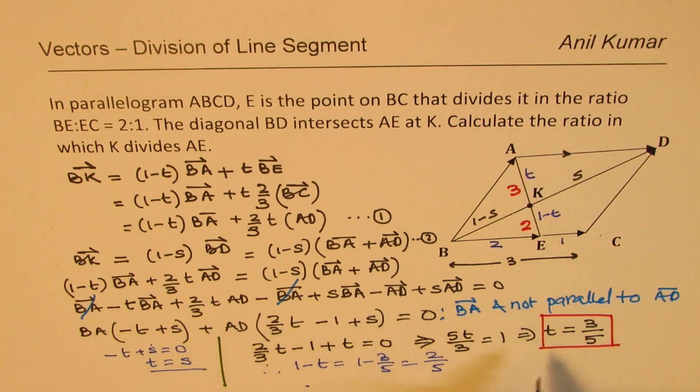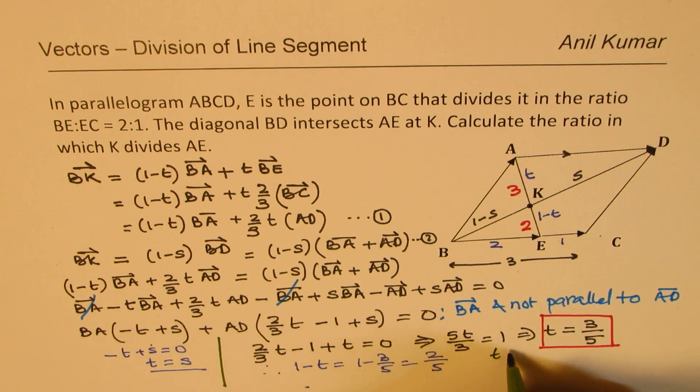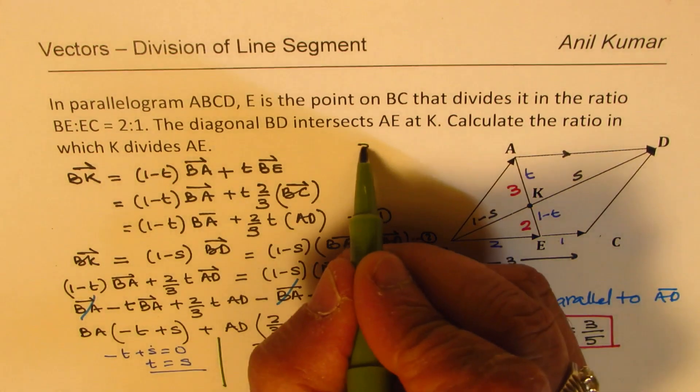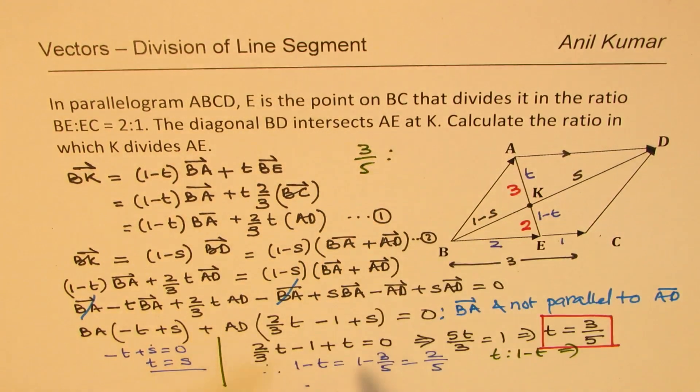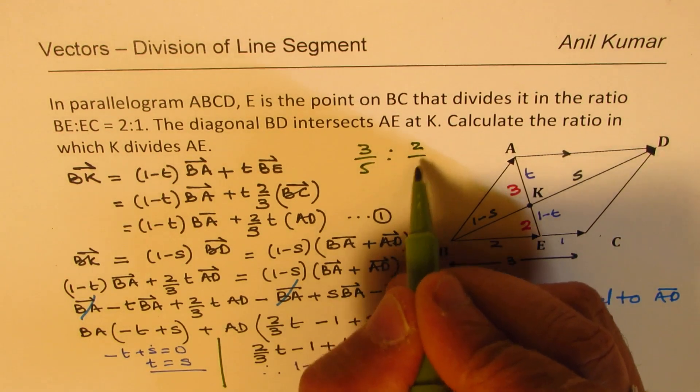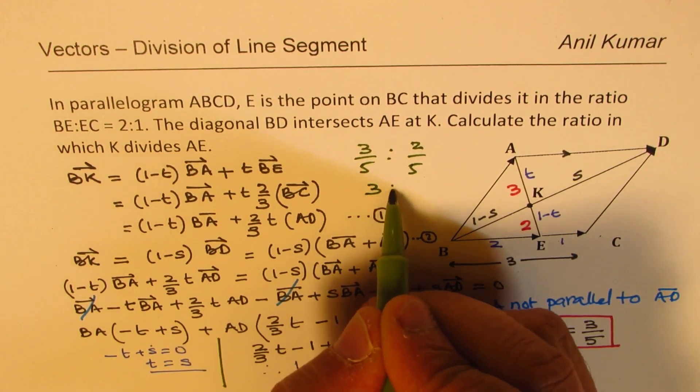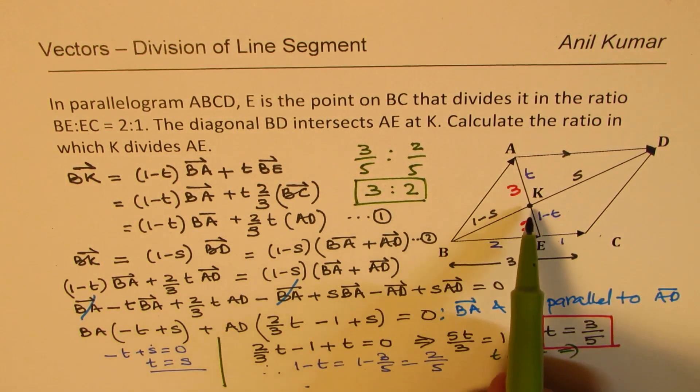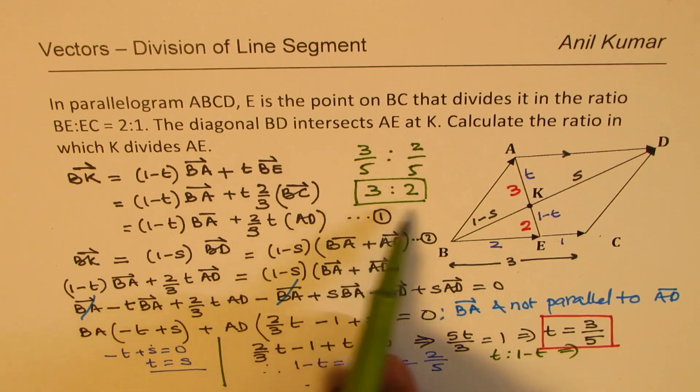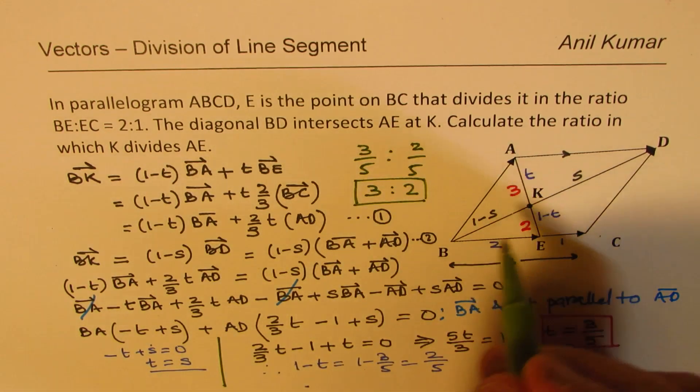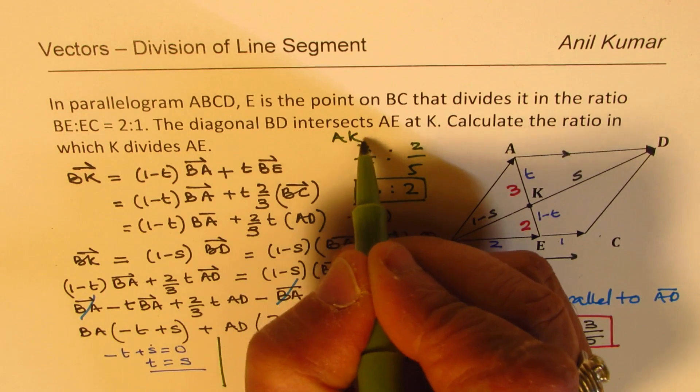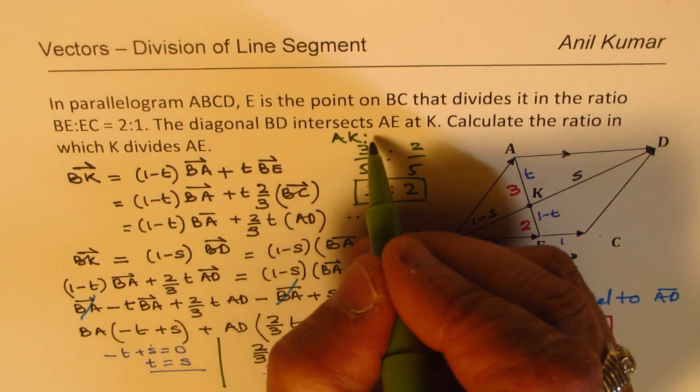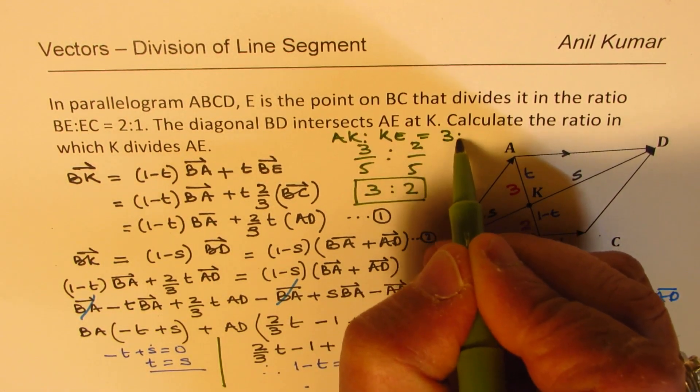So the ratio here is, we have taken this ratio as T is to 1 minus T, which is equal to 3/5 is to 2/5, or 3 is to 2. So that becomes the answer. So K divides AE into the ratio of 3 is to 2, where AK is to KE is equal to 3 is to 2.